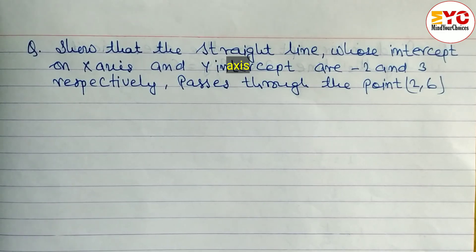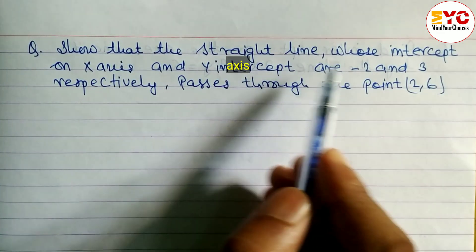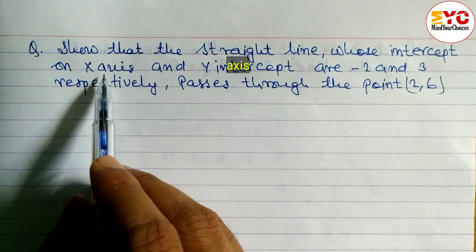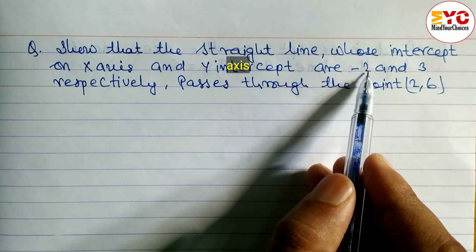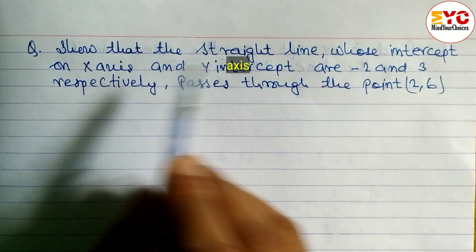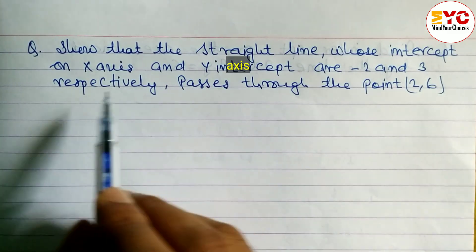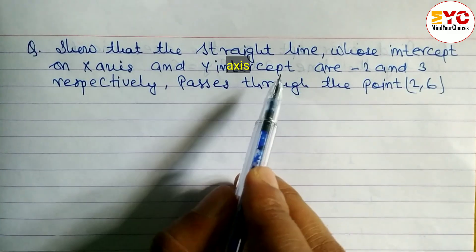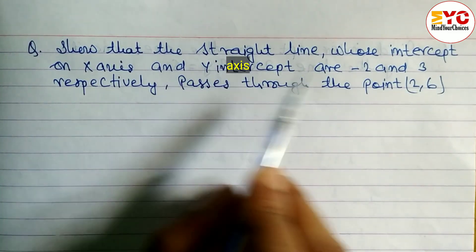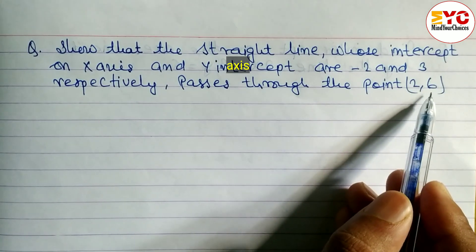Here we have a question related to a straight line whose x-intercept and y-intercept are given. Minus 2 is the x-intercept and 3 is the y-intercept respectively. We have to show that the equation of a straight line passes through the point (2, 6).